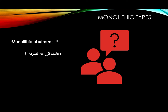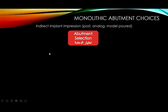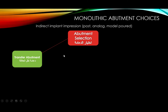This abutment selection slide outlines the choices available after obtaining an indirect implant impression, post-analog, and model. Options include: transfer abutments (used as both transfer and abutment), and preformed abutments. For preformed abutments, three size parameters must be considered: diameter (e.g., 3.0, 3.5, 4.0, 4.5, 5.0 mm), cuff size (height between the analog and the margin line), and coronal length.